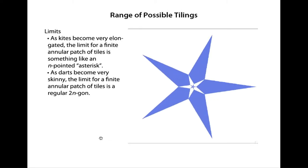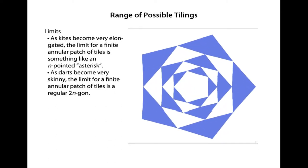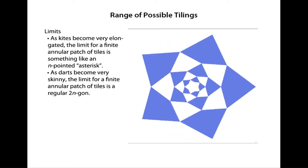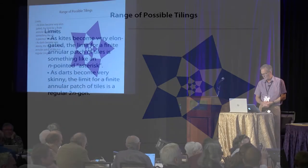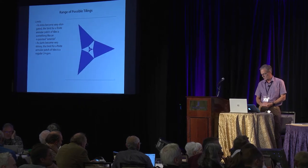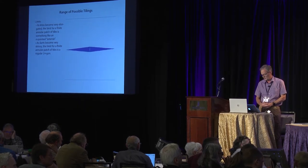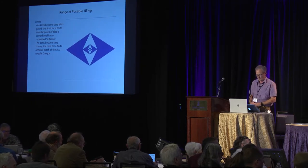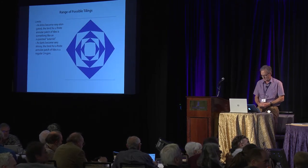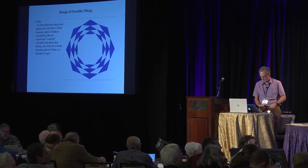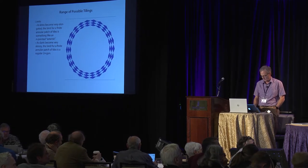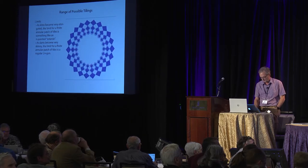There's a continuum of shapes for any n greater than one. Here's n equals five — starts kind of star-like, goes through the triangle to a dart, and ends up with a moment of a 2n-gon. And then, somewhat surprisingly, you can go all the way down to n equals two, in which case the kites are always concave. And you can go to an arbitrarily large value of n — up to 25 or so — and there's a wide range of kite shapes for a given n.